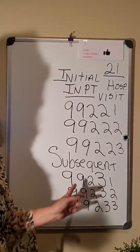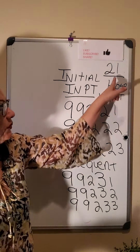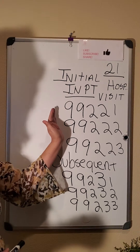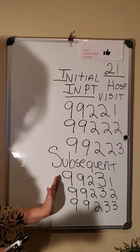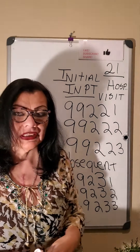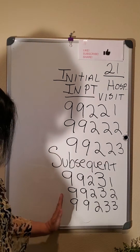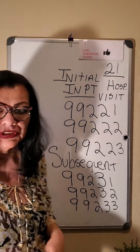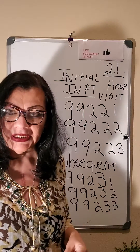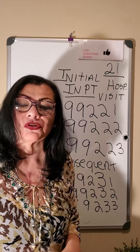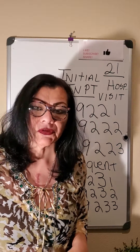Quick review before we move on: for the initial inpatient hospital visit, place of service 21, you have three codes for the initial. After that, any time the doctor goes to see the patient while the patient is in the hospital, you can bill one of the subsequent codes as many times as needed. When the patient gets better and goes home, the doctor is going to discharge the patient and wants to get paid for that.